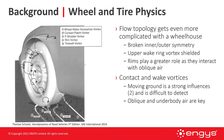The moving ground is a strong influence on the contact and wake vortices. The oblique and underbody air are key because they interact with all of these vortices at the bottom of the tire. As a whole, the wheel, the rims, the tires, the wheelhouse, some of the rotating components behind the rim like disc brakes, and stationary components like the calipers can all affect how air moves through this component on the vehicle.